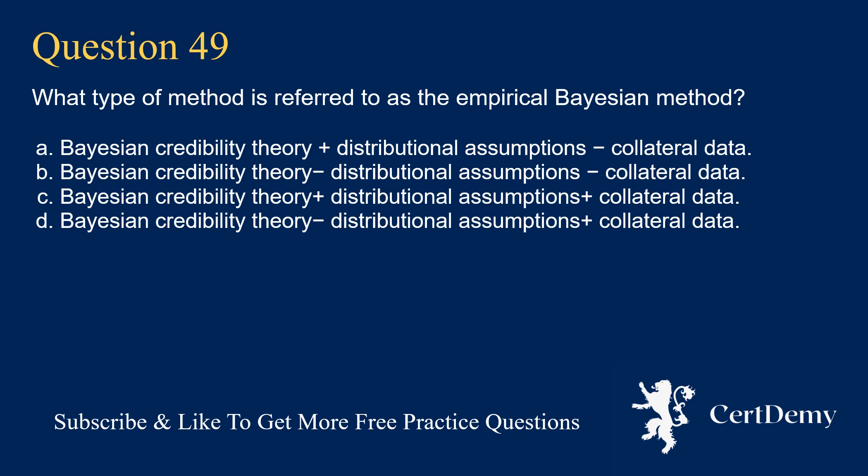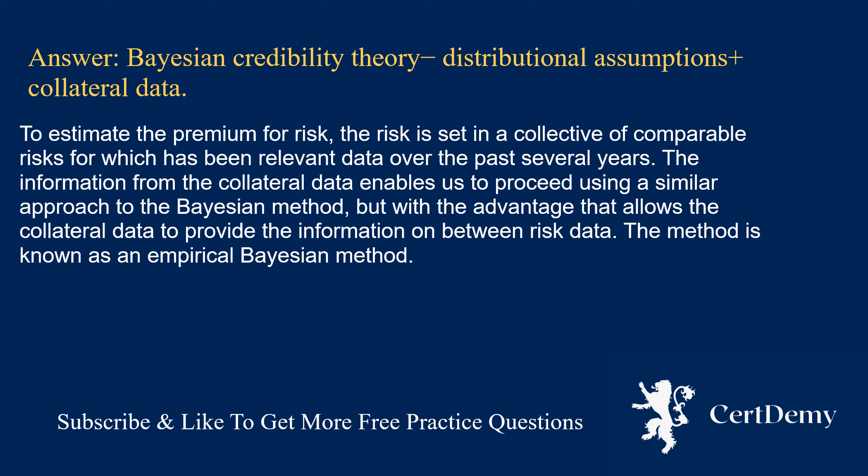Question 49. What type of method is referred to as the empirical Bayesian method? Options: Bayesian credibility theory plus distributional assumptions minus collateral data; Bayesian credibility theory minus distributional assumptions minus collateral data; Bayesian credibility theory plus distributional assumptions plus collateral data; Bayesian credibility theory minus distributional assumptions plus collateral data. The answer is: Bayesian credibility theory minus distributional assumptions plus collateral data. The collateral data enables a similar approach to the Bayesian method, using collateral data to provide information on between-risk data. This method is known as the empirical Bayesian method.